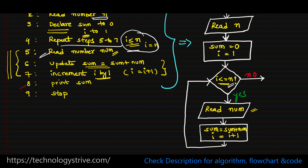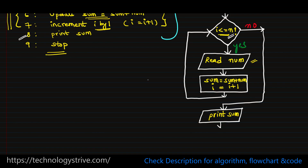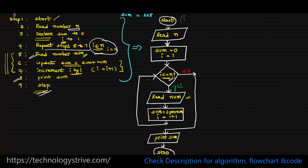This continues until i is no longer less than or equal to n. When the condition is false (no), we have already computed the sum of n input numbers. So we print the sum using a parallelogram for output, then end the algorithm with a terminator oval. Steps 5, 6, 7 execute on yes, and step 8 executes on no, followed by stop.